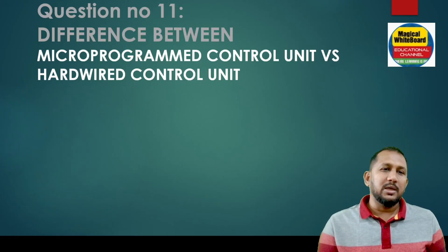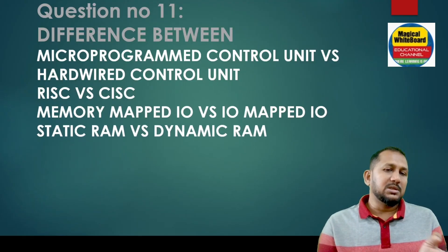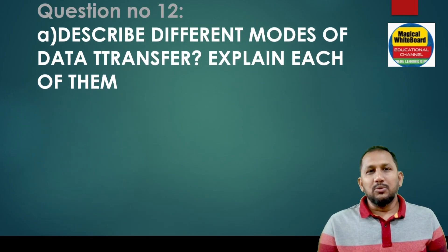Question 11: difference between microprogram control unit and hardwired control unit. RISC versus CISC. Memory mapped I/O versus I/O mapped I/O. Static RAM versus dynamic RAM. These are the differences.